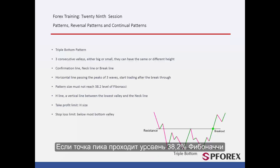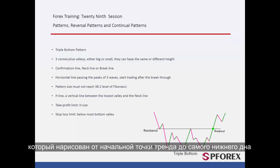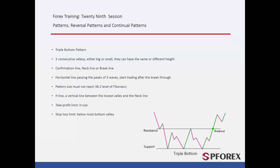If a peak point passes the 38.2% level of the Fibonacci pattern, which is drawn from the start point of the trend to the most bottom valley, the triple bottom pattern will not be reliable.